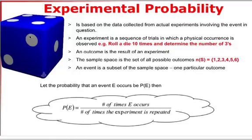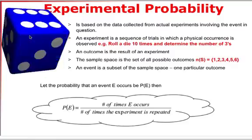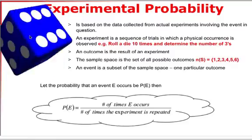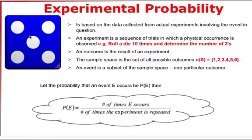An experiment is a sequence of trials in which a physical occurrence is observed. For example, I could roll this dice ten times, and in the ten rolls, I would be wanting to know how many threes are observed. And so that would be an experiment.